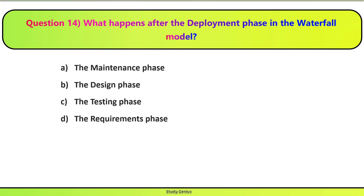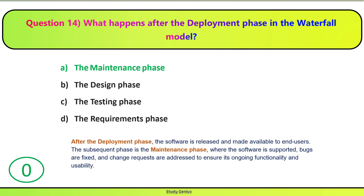Question 14. What happens after the deployment phase in the waterfall model? Waterfall model mein deployment phase ke baad kya hota hai? Correct answer is A. Maintenance phase. After the deployment phase, the software is released and available to end-users. The subsequent phase is the maintenance phase, where the software is supported, bugs are fixed, and change requests are addressed to ensure its ongoing functionality and usability.